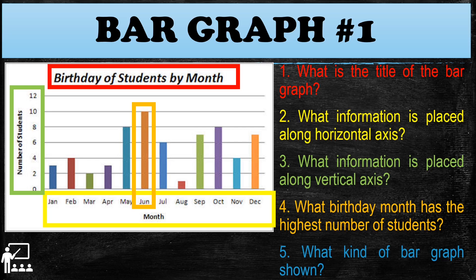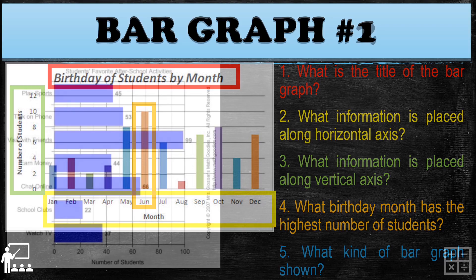The month with the highest number of students is June — as you can see, there are 10 students with birthdays in June, making it the highest month. For question five, what kind of bar graph is shown? In bar graph number one, the kind of bar graph is vertical, because the data is drawn vertically.